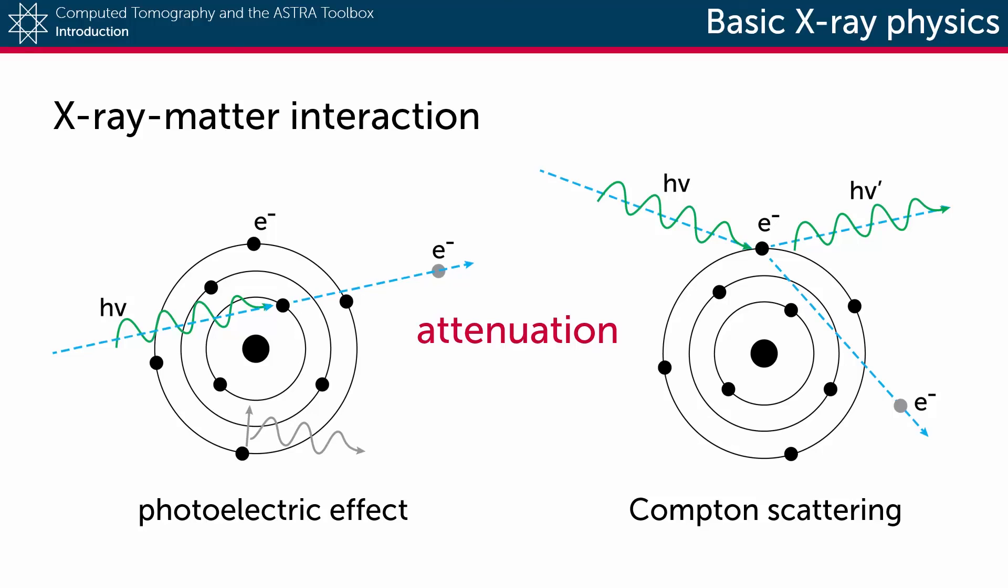Now in both cases, the incoming photon will fail to hit the detector and the measured intensity of the X-ray beam will therefore decrease.